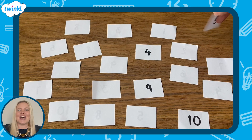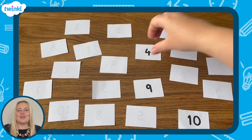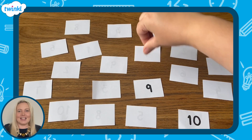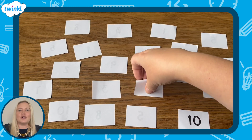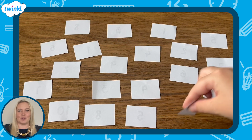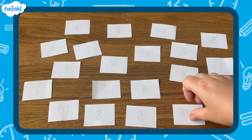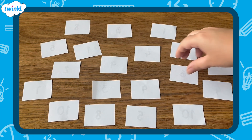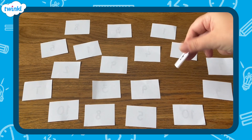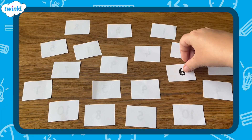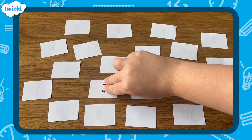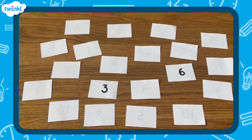Here are two sets of number cards with the numbers 1 to 10. I've shuffled them and spread them out face down on the table. I'm going to turn over two cards and compare the values of the two numbers using the words less than, greater than, or equal to.